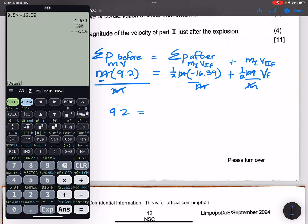So 0.5 times minus 16.39, we get minus 8.195.